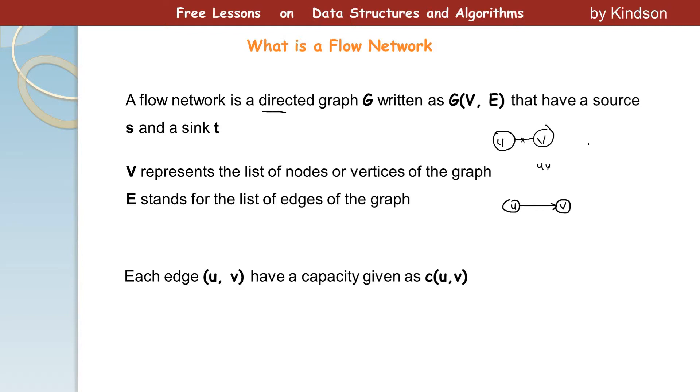So each edge (u, v) have a capacity given as c(u, v). So it means that if we have a source of water, let's say a source of water here, and this water is going to be supplied to some recipients, let's say whatever it is here. So we have this water flowing in here, so we have from here to here is an edge. Yeah, it represents an edge.